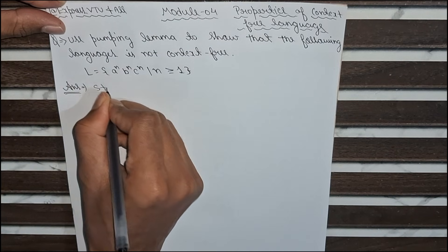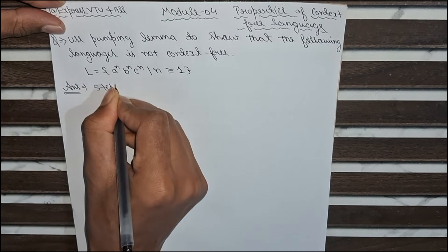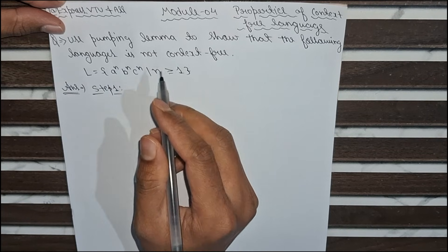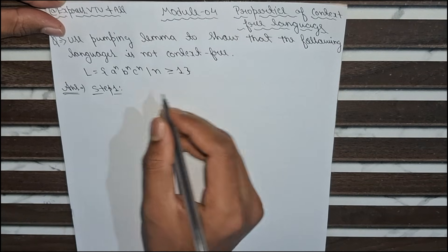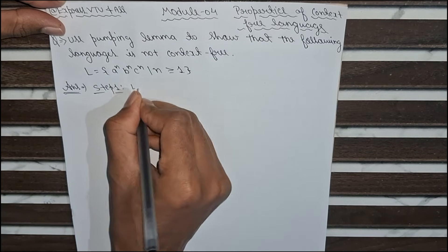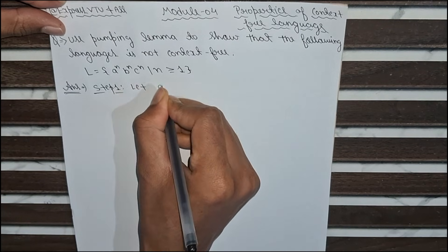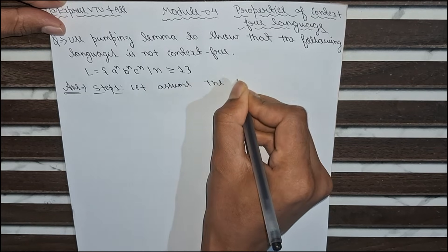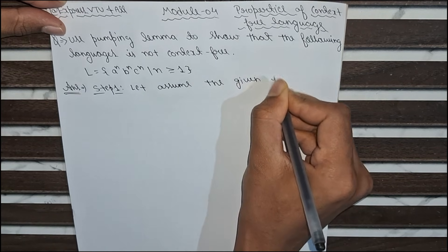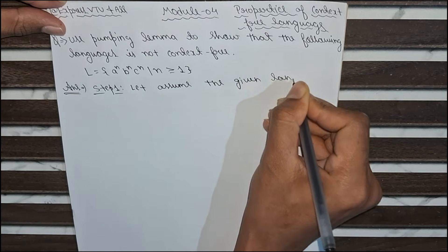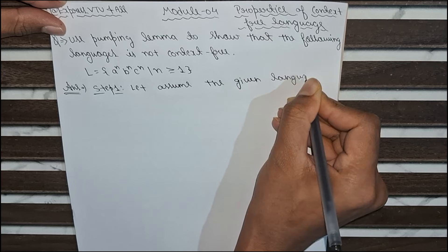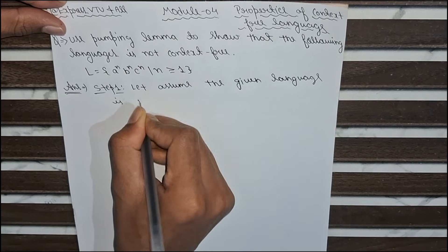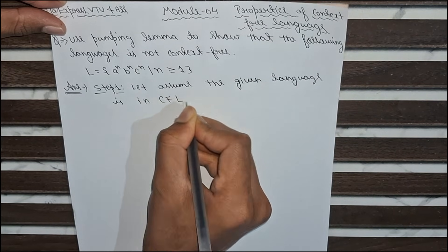Step 1 is assuming this language is a context free language. So we write: let us assume the given language in the question is a context free language.